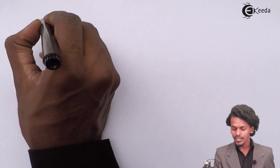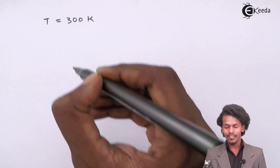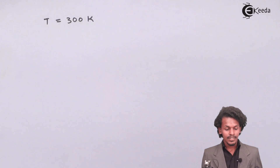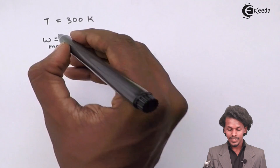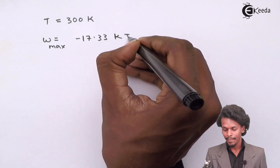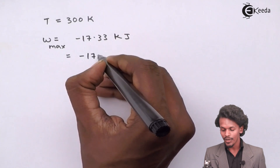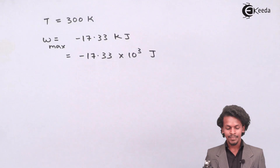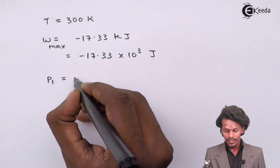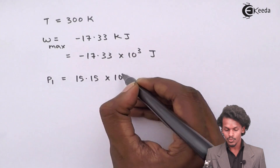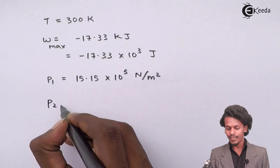The temperature being maintained in this process is 300 Kelvin. The work done, which is the maximum work provided, is minus 17.33 kilojoules, which can be converted to minus 17.33×10³ joules. The initial pressure P1 is given as 15.15×10⁵ Newton per meter square, and we have to calculate the final pressure P2.